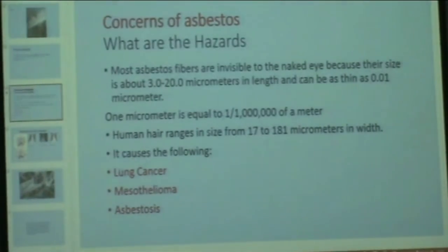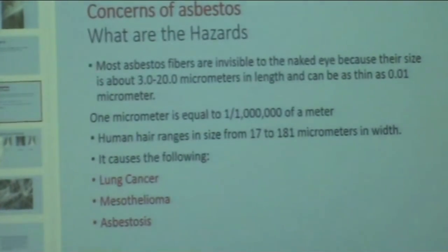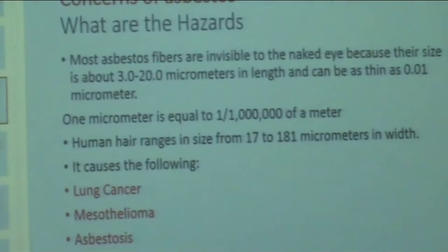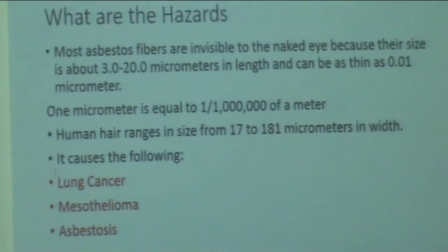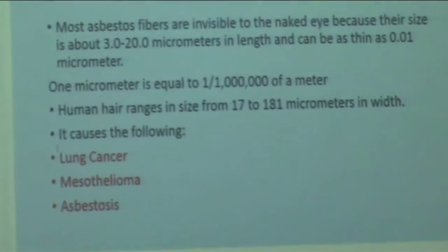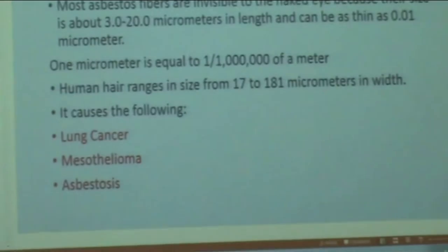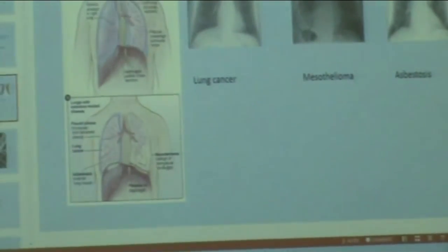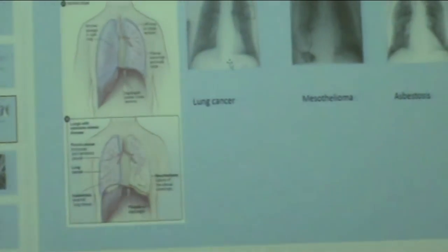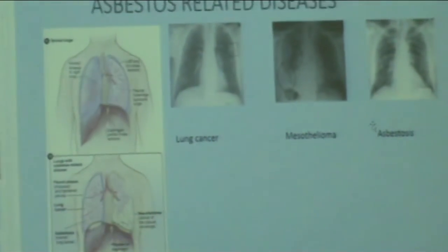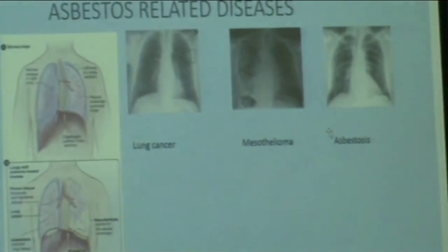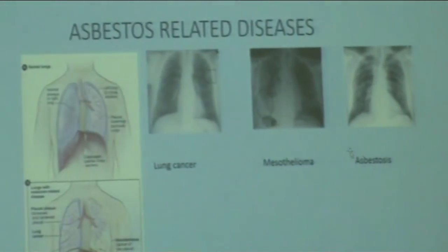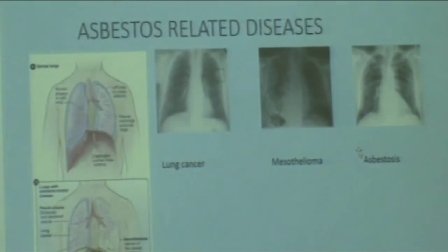One micrometer equals one millionth of a meter. The human hair ranges in size from 17 to 181 micrometers. The biggest concerns are lung cancer, mesothelioma, and asbestosis. Here we see X-rays of lung cancer, mesothelioma, and asbestosis. Lung cancer causes a severe problem.